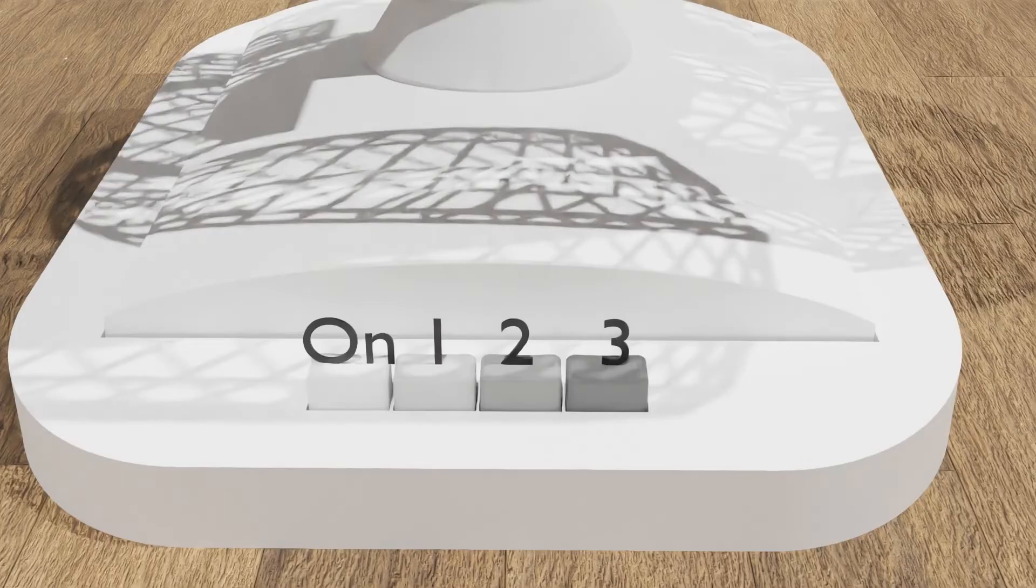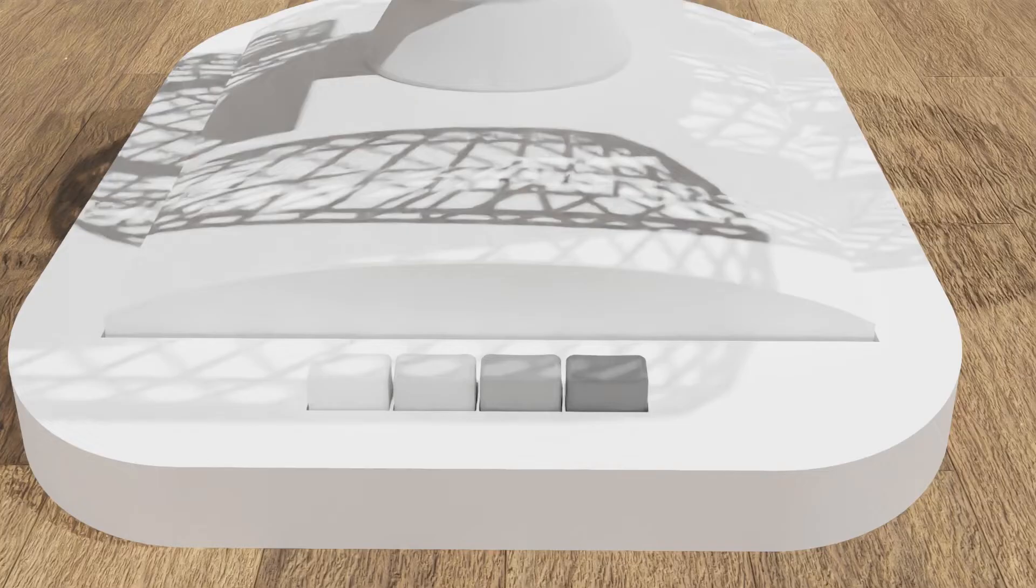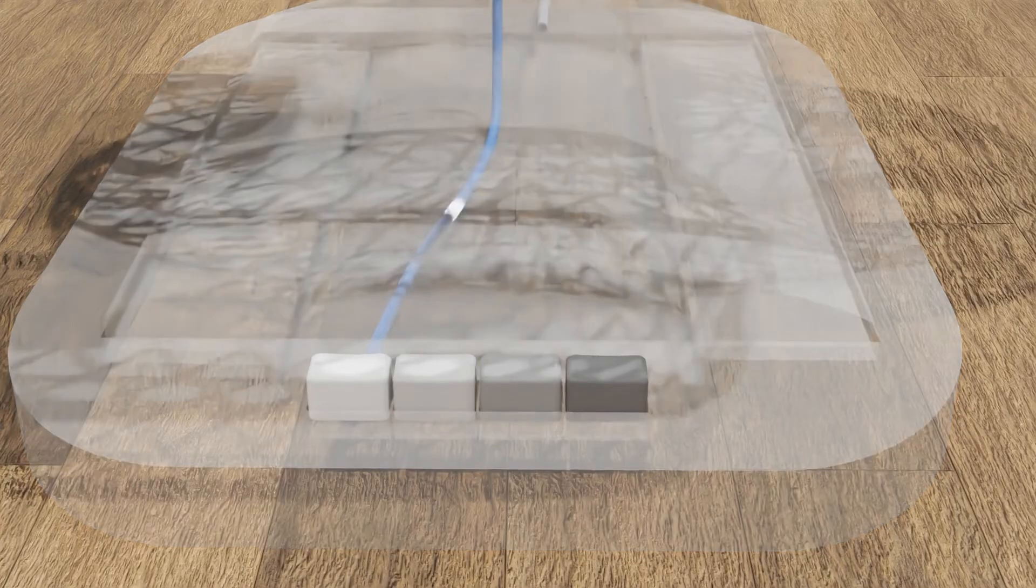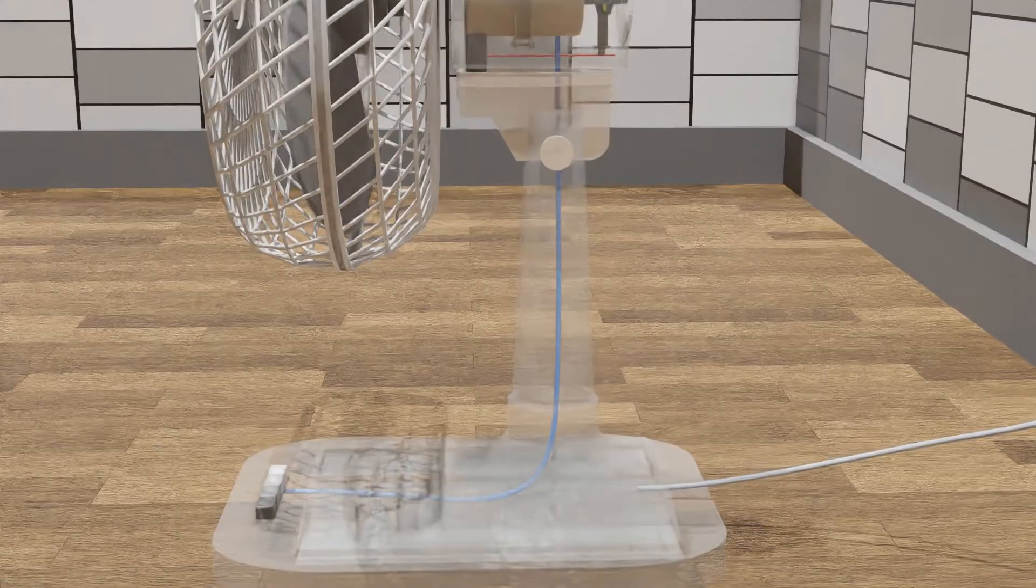Among the four buttons, three control the speed, and the white one turns the fan on and off. When the white button is pressed, it sends the signal to the motor and the fan starts spinning at whatever speed we choose.